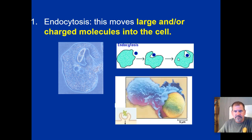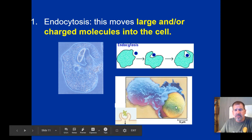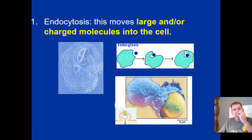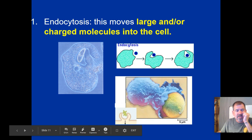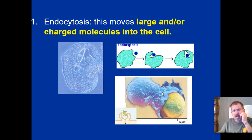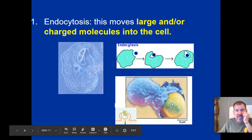Here's a cartoon image showing that process. This is an actual white blood cell attacking a bacteria cell — the colors are computer-enhanced so we can see it, but this is literally a white blood cell attacking an infectious agent using endocytosis.